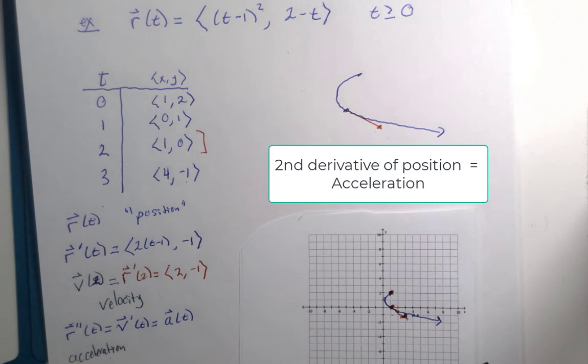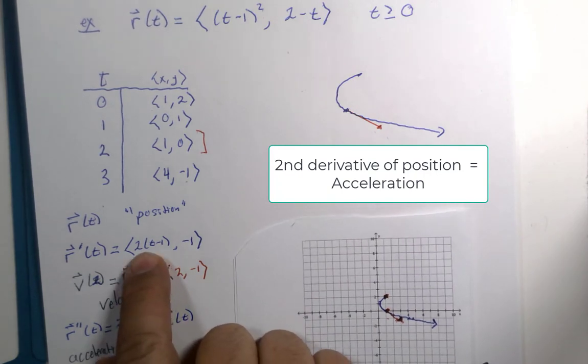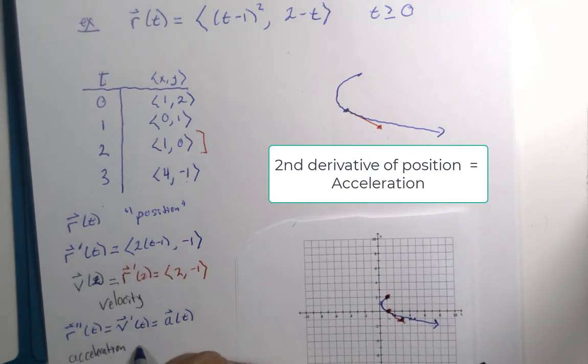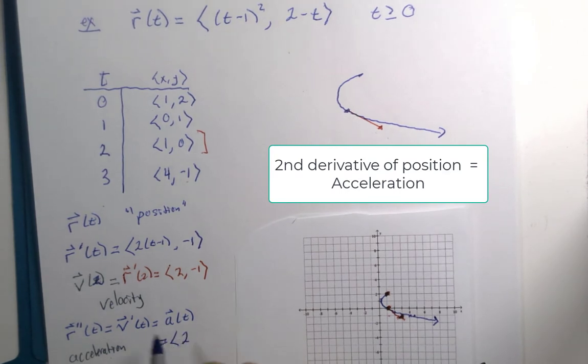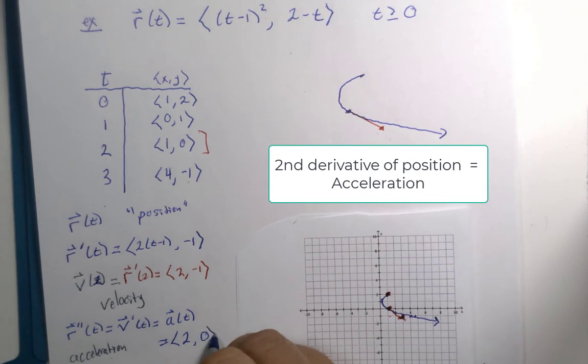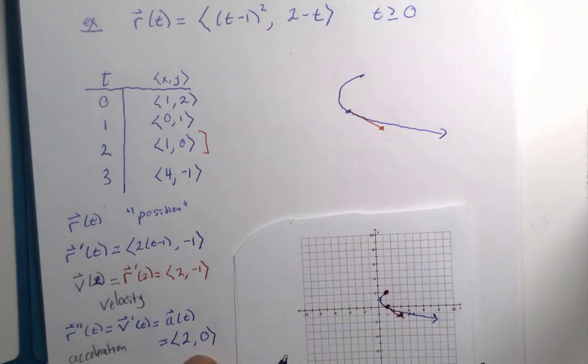If we calculate one more derivative, the derivative of 2t minus 2 is 2. And the derivative of negative 1, since it's constant, is 0. And it turns out this vector is constant.